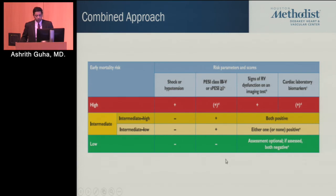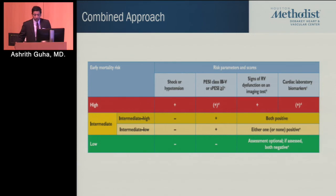The intermediate-low risk group has either RV dysfunction or a positive troponin — not both. When everything is negative, risk is low. How to use this in clinical practice is still an open question. The guidelines recommend that in intermediate-high risk patients, you could consider thrombolytics if they are not improving. Surprisingly, thrombolytics was actually a class 3 recommendation — meaning really contraindicated — in the intermediate-low risk group.